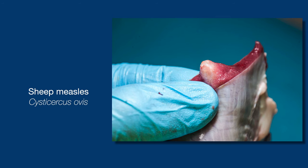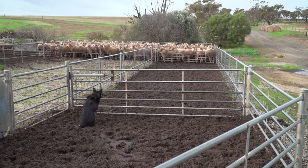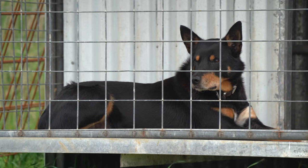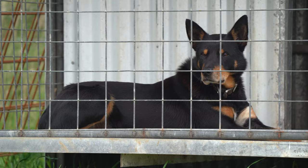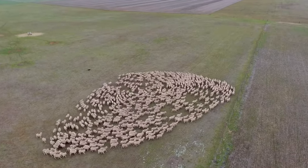Sheep measles, more technically known as C. ovis or Cysticercus ovis, is a cyst roughly the size of your small fingernail that forms primarily in the diaphragm and brisket of affected sheep. Sheep measles is primarily the intermediate stage of the dog tapeworm, and especially the hydatid tapeworm. When dogs contaminate pasture with faeces, sheep get access to the intermediate stage and that results in the cysts in the muscle of sheep. Potentially foxes are also a spreader of the disease, but it's not generally recognised that foxes or, for that matter, dingoes are a big issue.